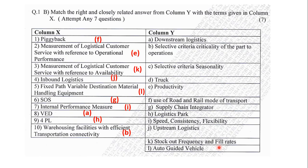Along with that, question number 1B was match the column, so the answers have been noted down in red. You can go through it once and note it down.